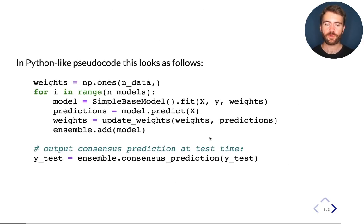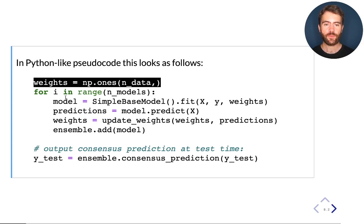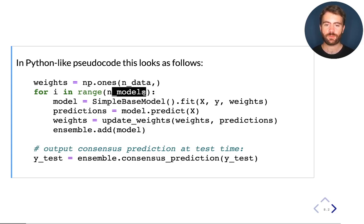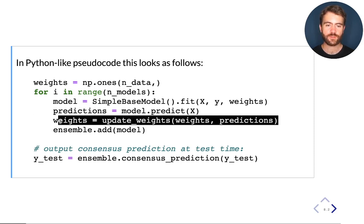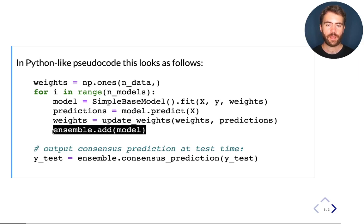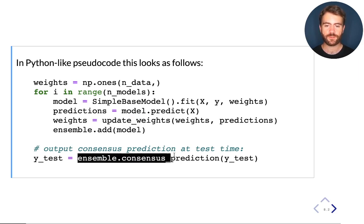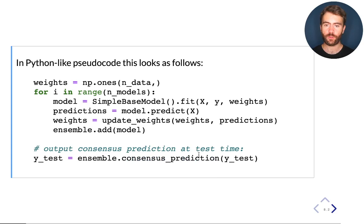If I were to implement this in Python, I would use the following general structure: initially start with a uniform set of weights, then for each iteration, fit a model with the current set of weights, look at its predictions, create a new set of weights, and add it to the ensemble. The output would be some kind of consensus — something like the weighted average of the predictions from all of the weak learners trained as part of this procedure.